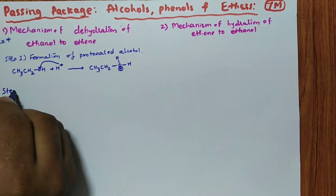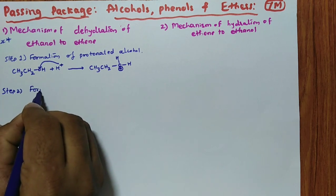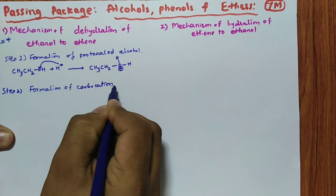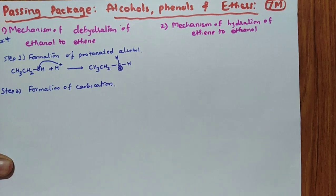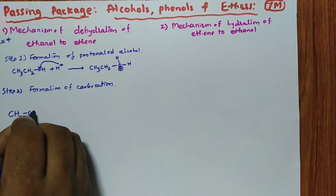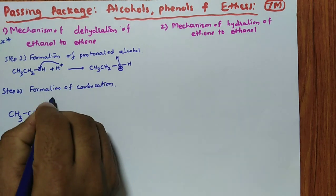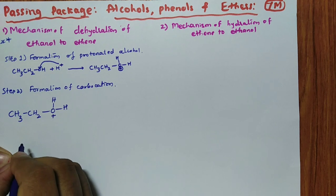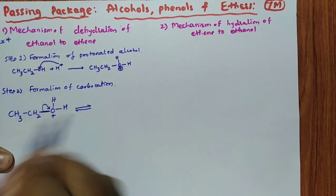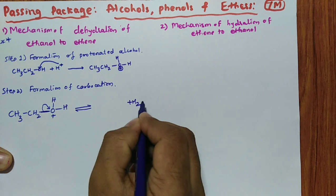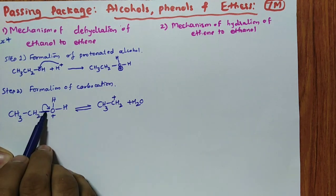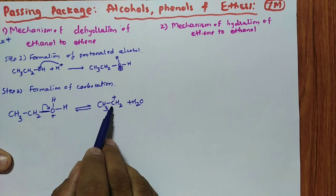Then second step — step 2: formation of carbocation. So here we have CH3, CH2, OH2+. In this particular case, this positive charge will take the electron along with it, forming H2O plus what is left — CH3, CH2+. This is called carbocation.